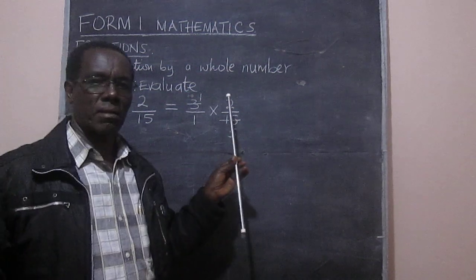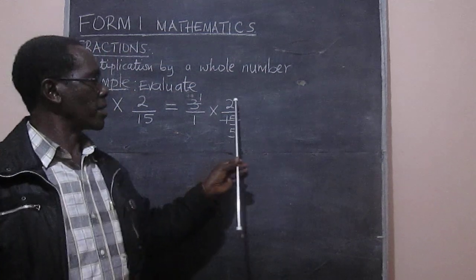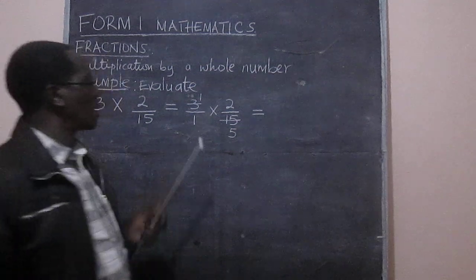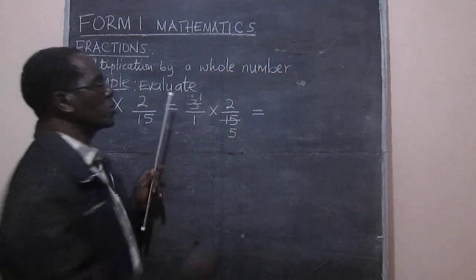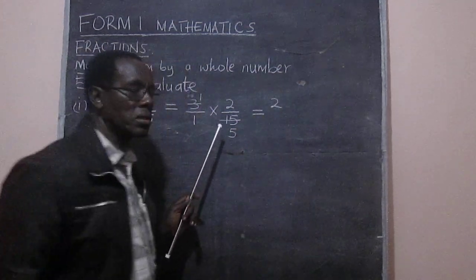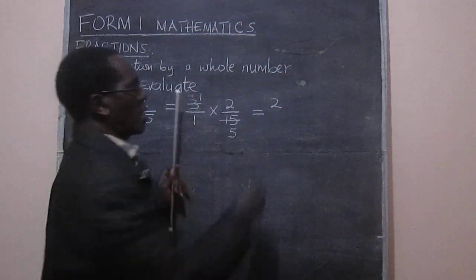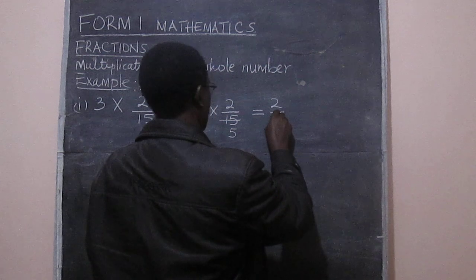we need to multiply those numbers that are appearing on the numerator. So that we have 1 multiplied by 2, that gives us 2. And then 1 multiplied by 5, and that gives us 5.